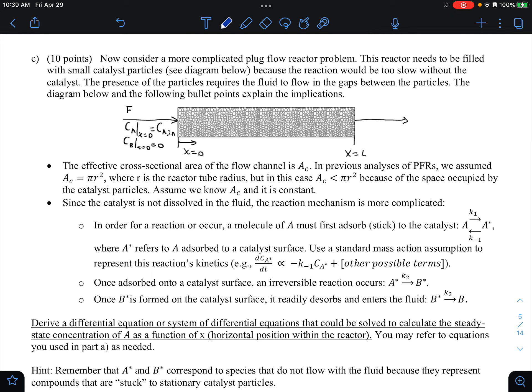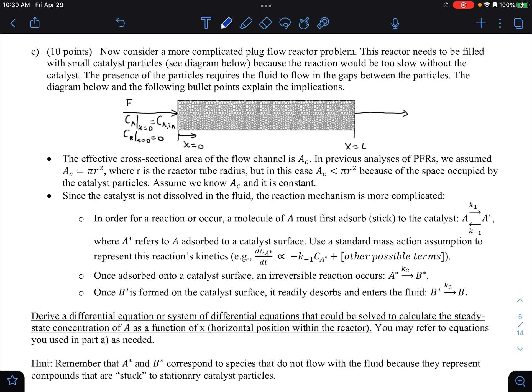Part C, now this is a curve. Also note that it's 10 points. So it's worth fewer points. Unfortunately, the designation of points often is unfair to the students who have the deepest level of knowledge, right? So the extra points you get for solving the hardest question is not always worth your time. So this should also take a little pressure off of you. So now let's see what's going on. Now consider a more complicated plug flow reactor situation. The reactor is filled with catalyst particles because the reaction will be too slow without the catalyst. The presence of the particles requires fluid flow in the gaps between the particles. The diagram below and the bullet points describe the details.